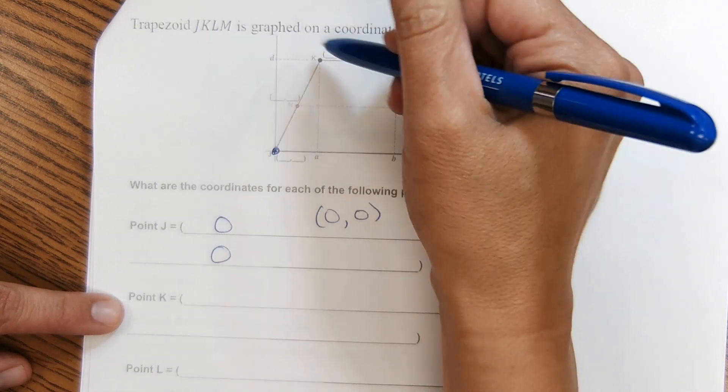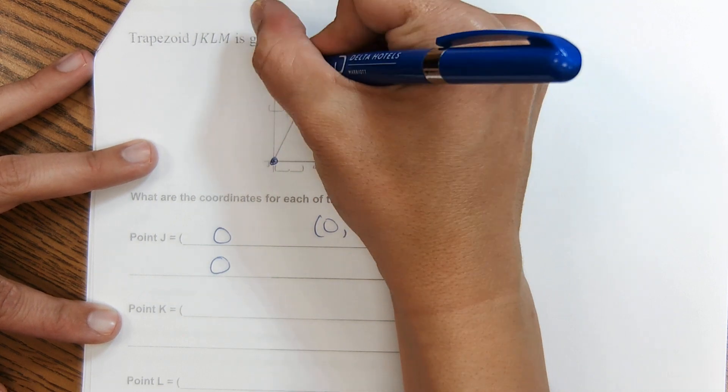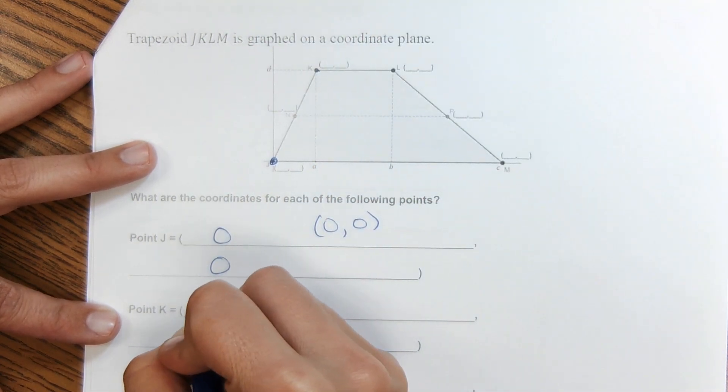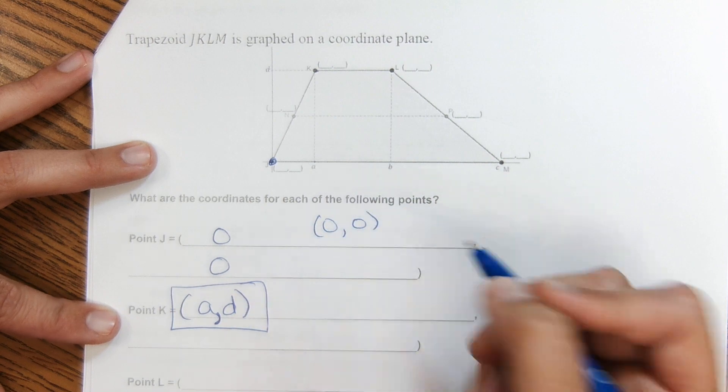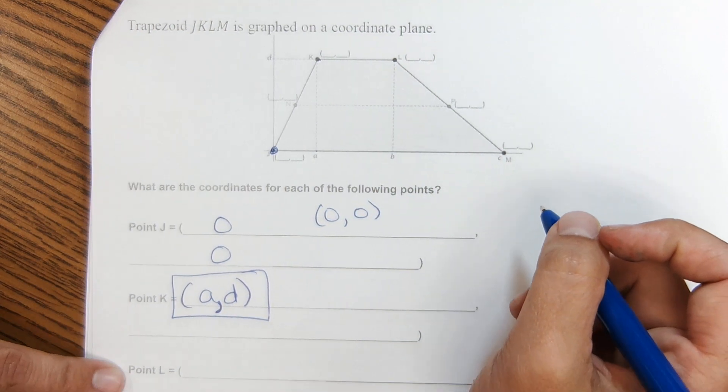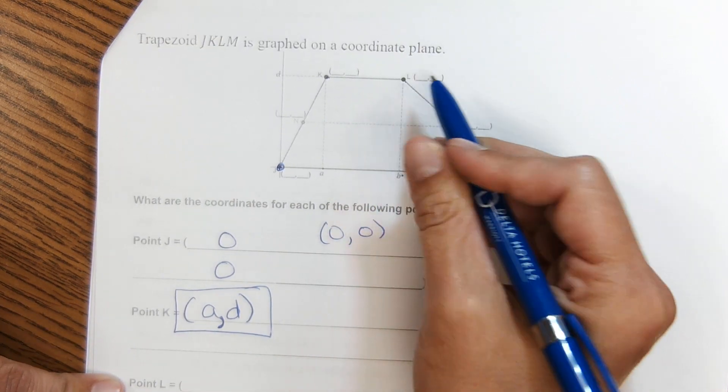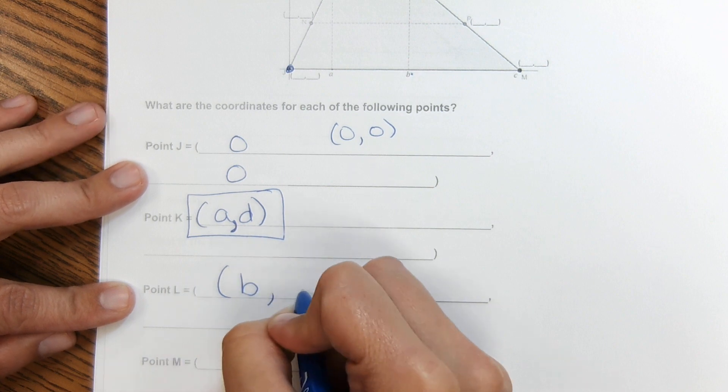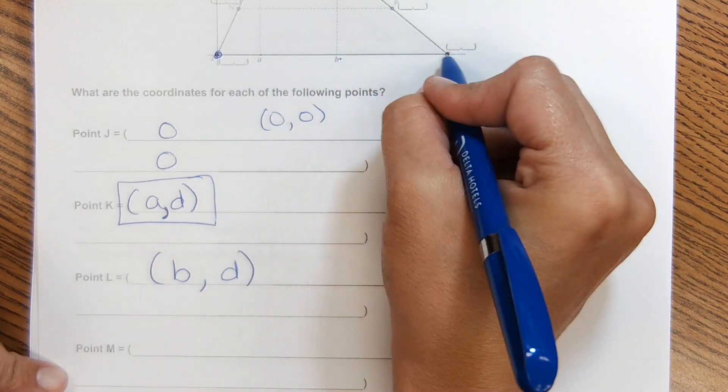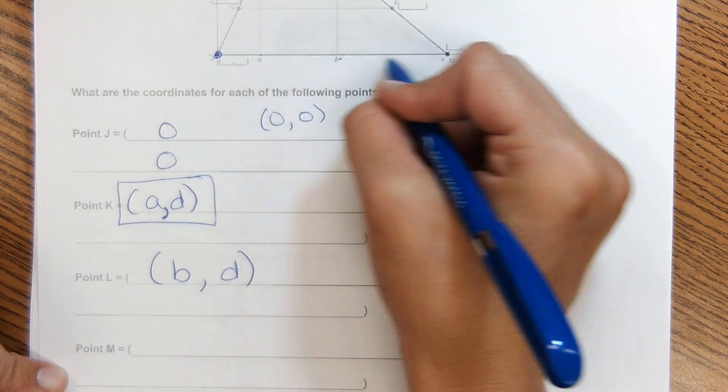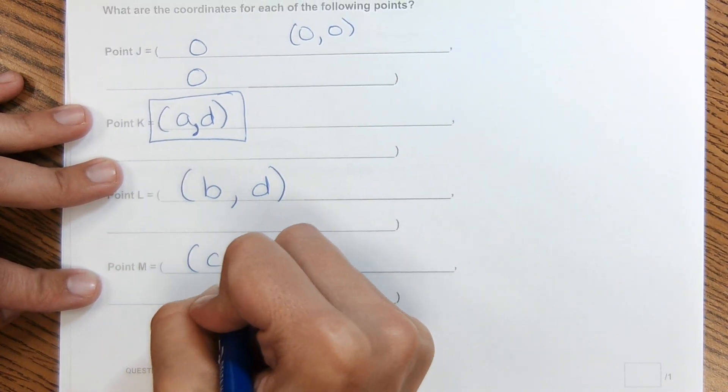Then for point k, right here, the coordinates for k, it looks like this distance is a for the x, and then it goes up to d on the y. So our coordinates here would be a, d, like this. I'll just put it in like it would look like those the coordinates. And then for l, point l right here, it is at b on the x-axis and it goes up to d on the y. So the coordinates for l would be b, d. And then for m, this one right here, m is right here, it is at a length of c on the x-axis and it's on the x-axis. So it doesn't go up or down any, so the y would be 0. So for point m, the coordinates would be c, 0.